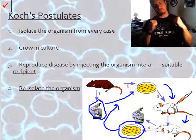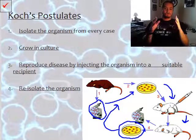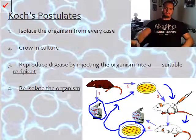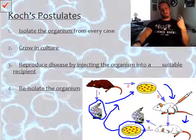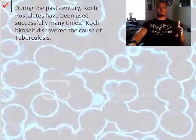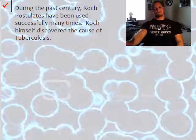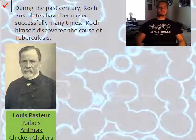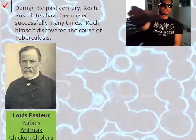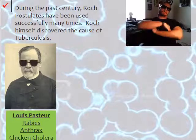By sacrificing these rats, Koch found out how bacteria causes specific diseases — and once we know that, we know how to fight it, prevent it, and stop it. Koch's postulates led the forefront for understanding how diseases infect people. During the past century, Koch himself discovered the cause of tuberculosis. Louis Pasteur found the cause of rabies, anthrax, and chicken cholera.